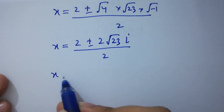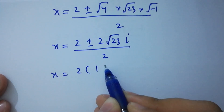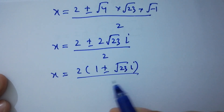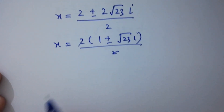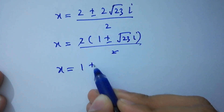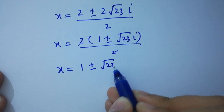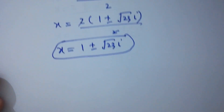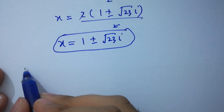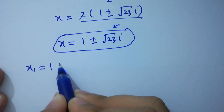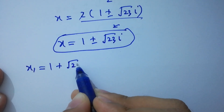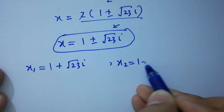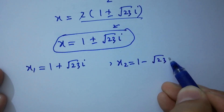Taking 2 as common: x equals 2 times (1 plus or minus square root of 23 times i) over 2. The 2s cancel, giving us x equals 1 plus or minus square root of 23i. So x₁ equals 1 plus square root of 23i, and x₂ equals 1 minus square root of 23i.